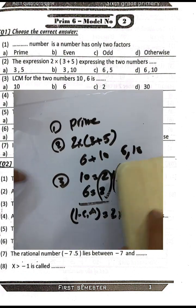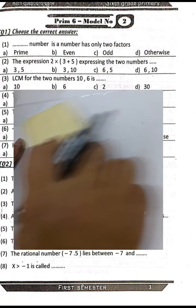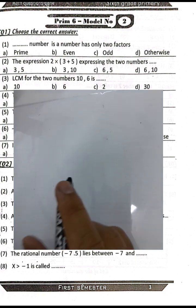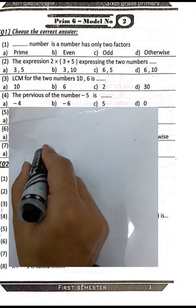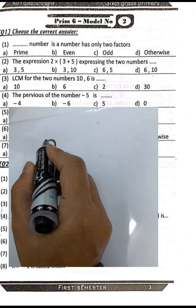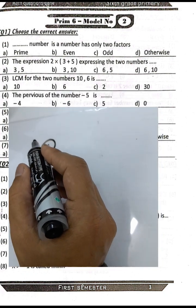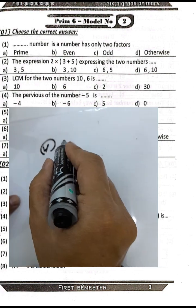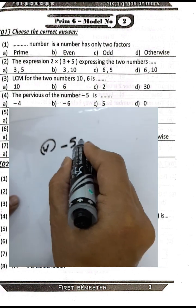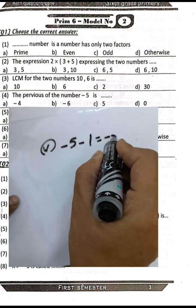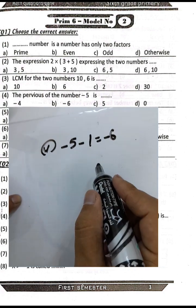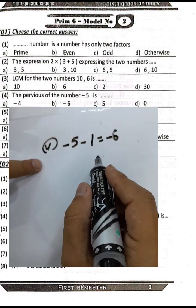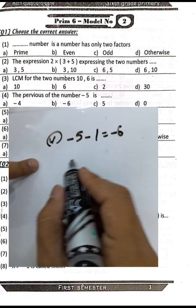Question number four: the previous number of negative five, subtract by one, it will be negative six. The previous of the number negative five is negative six.